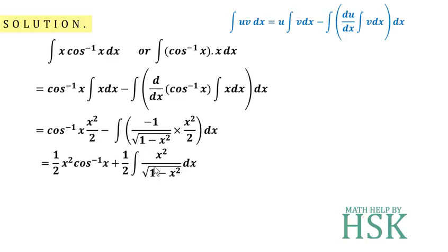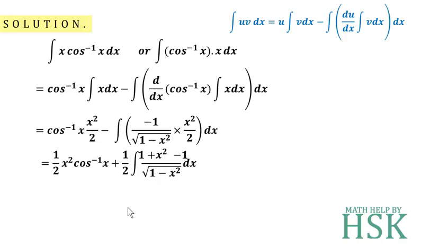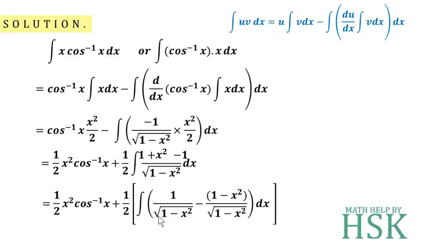To integrate x²/√(1 − x²), we apply a trick: add and subtract 1 from x². This gives two terms: 1 and (x² − 1). Taking these as separate terms and dividing each by the denominator, we can split the integral into two parts.